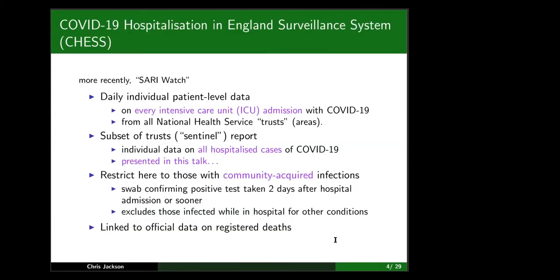The dataset I'm analysing is called the COVID-19 Hospitalisation in England Surveillance System — a surveillance system originally set up for flu, now renamed SARI Watch for severe acute respiratory infections. We managed to set this up quickly at Public Health England for monitoring COVID data as the epidemic in England began in February and March. It records daily individual-level data on every ICU admission from all NHS trusts in England.